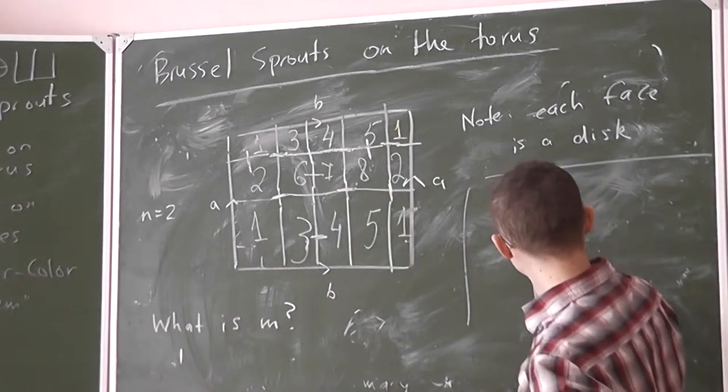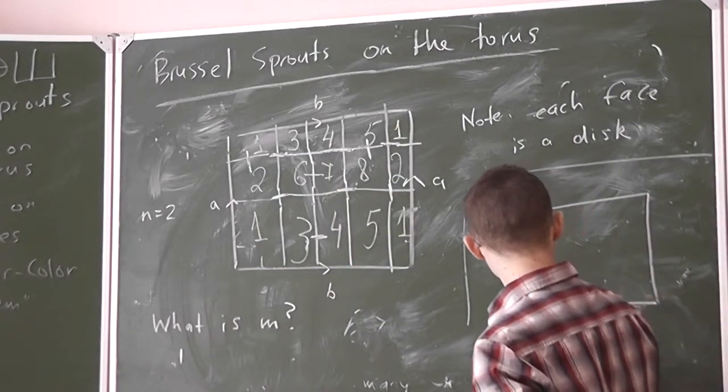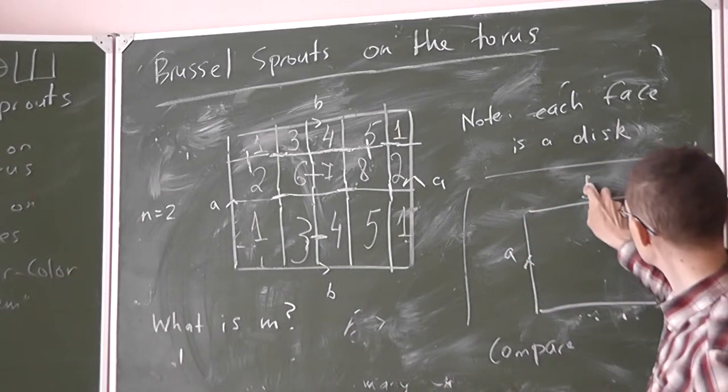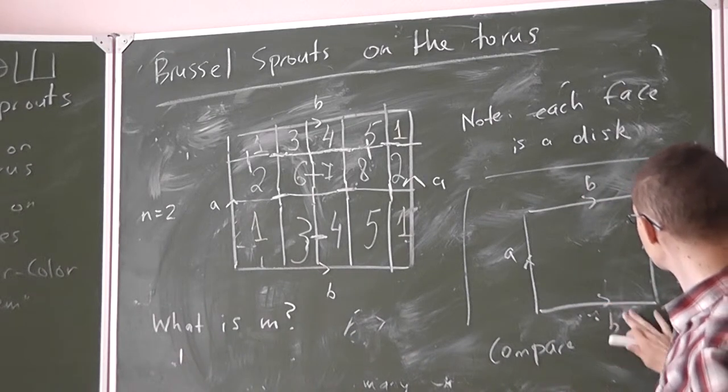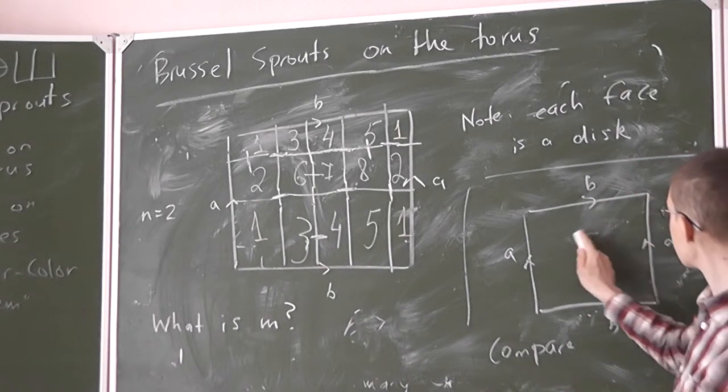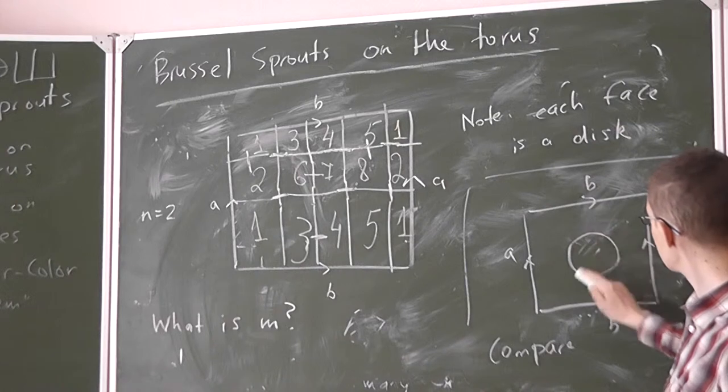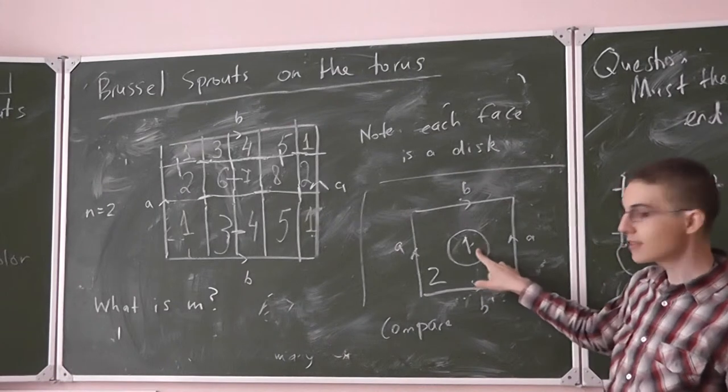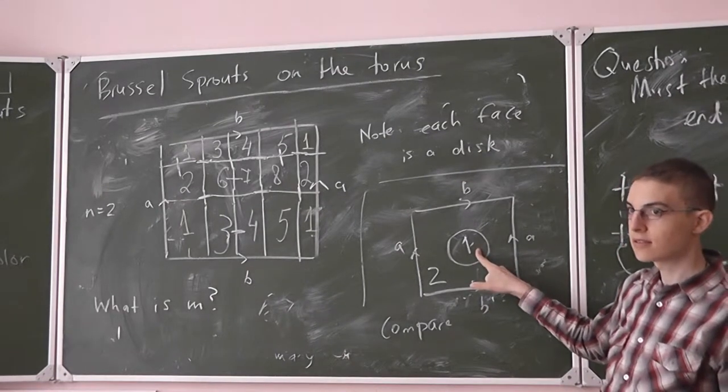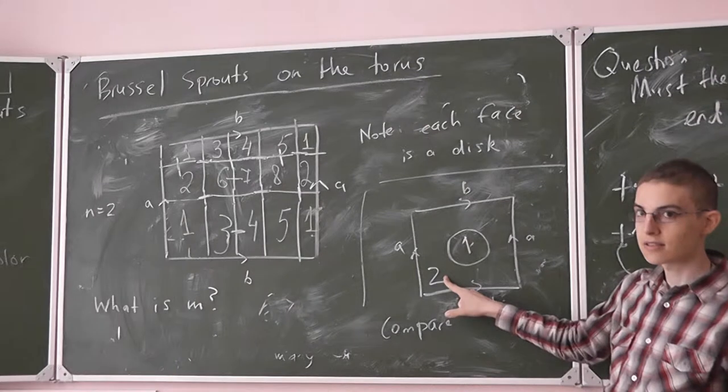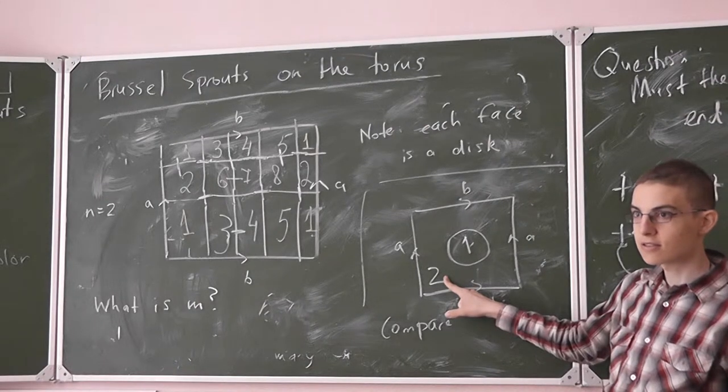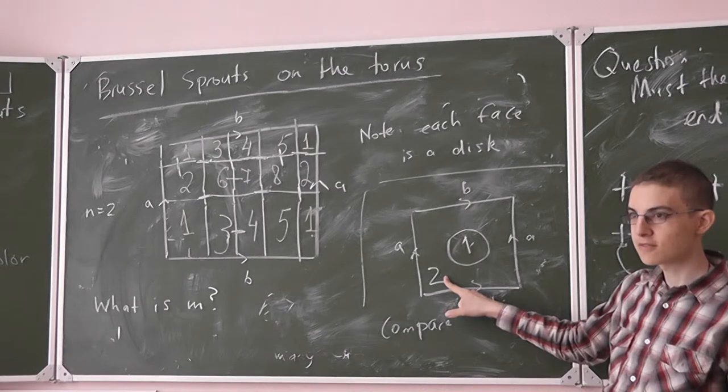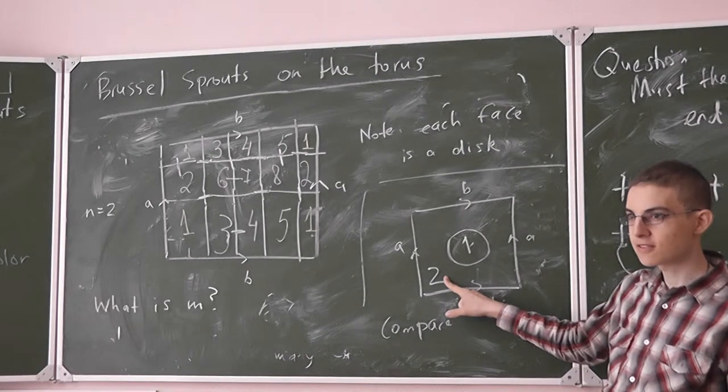Compare that if I add a torus. And here is the first. Is this a disk? Is this a disk? Yes. Why? No. The first is a disk, but the second is not. The second is torus which is cut out.